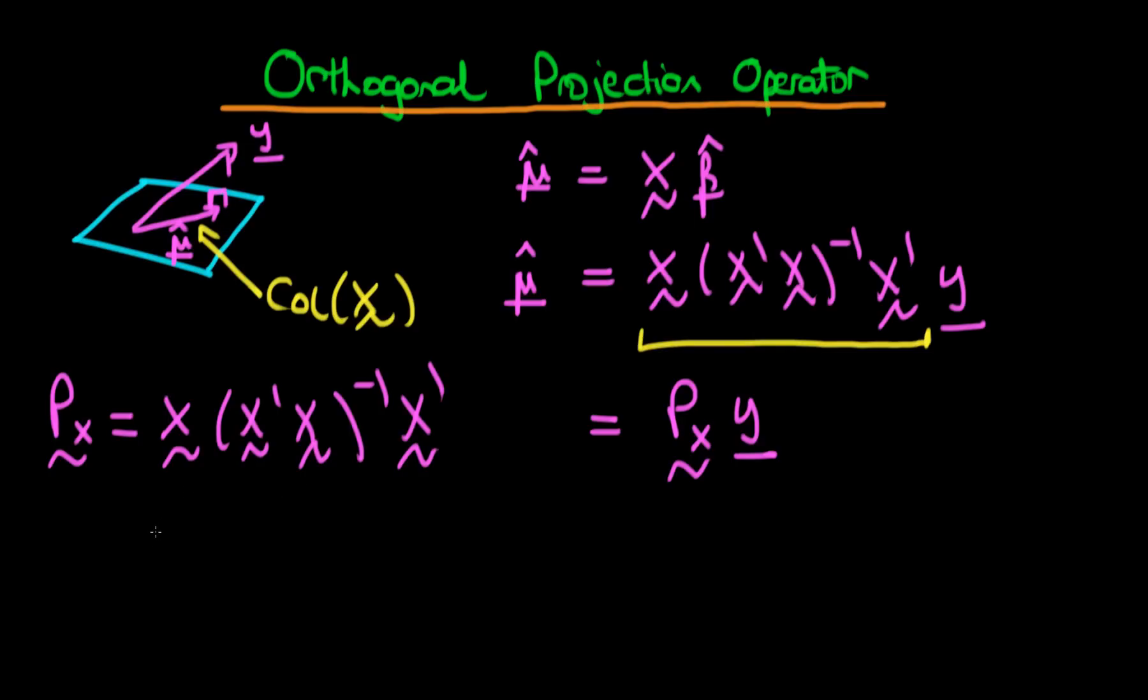And we can ask what sort of properties this projection operator should have. If we were to choose any vector which lies within the column space, so let's assume we picked a vector w which lies within the column space of X, then if we apply the projection operator to that vector w, we should just get that original vector w out in the first place because the projection of a vector which already lies in the column space is just going to be itself. You can't get any better projection than that.